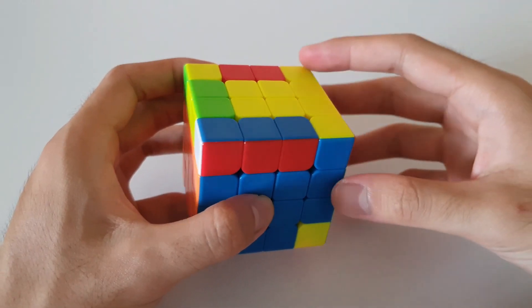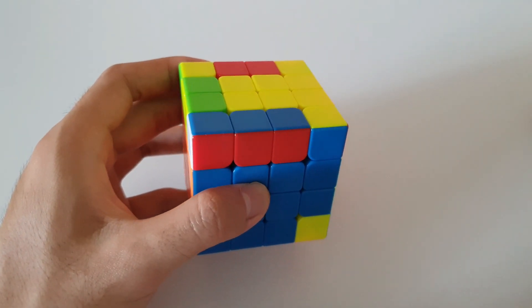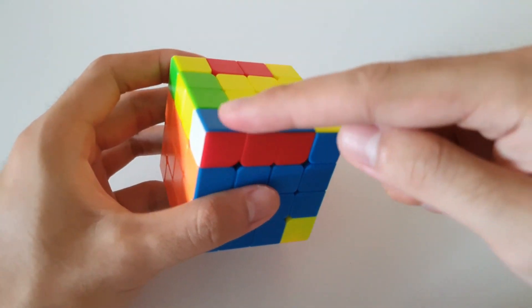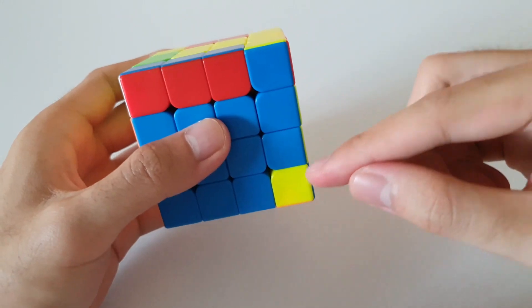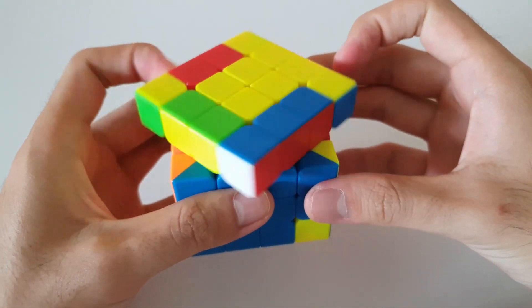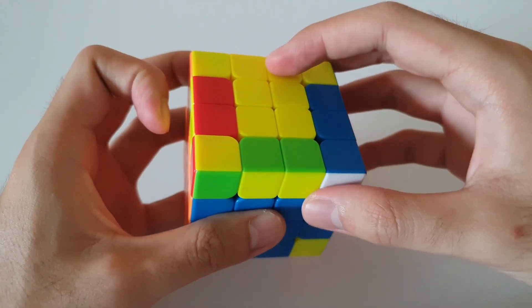So before I end this video, I just want to go over some general tips about using these parity algorithms. So when we have an F2L pair paired up and ready to insert, and we insert like this, we have, and notice that we have an oriented edge at the back.